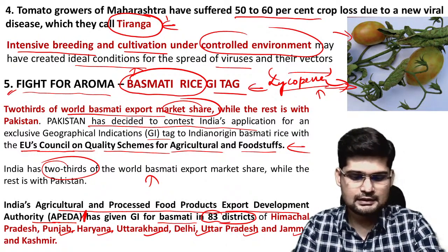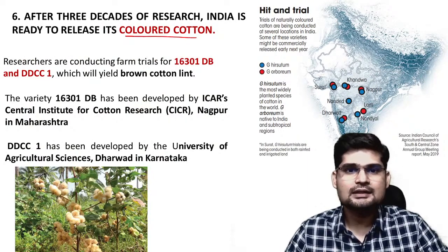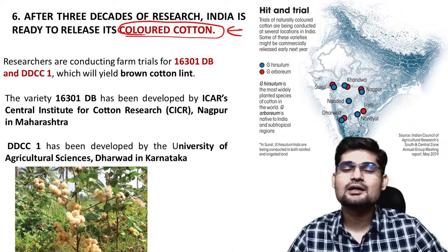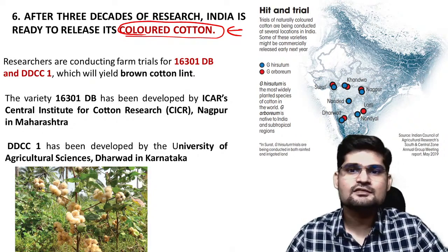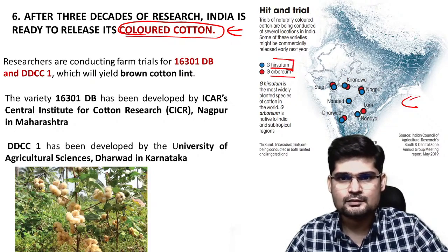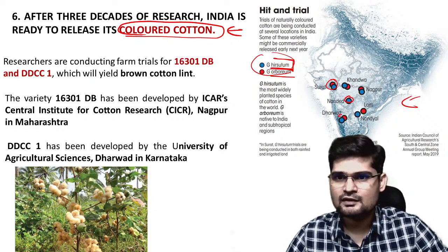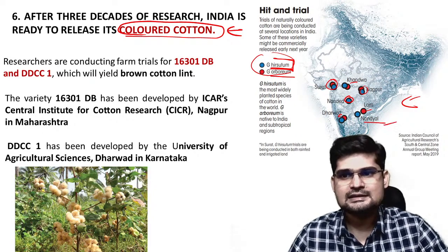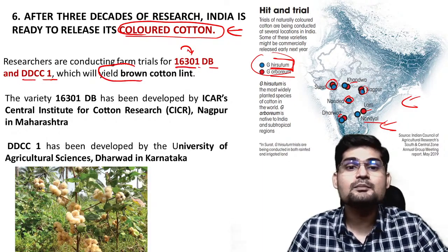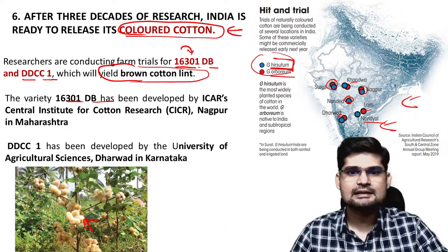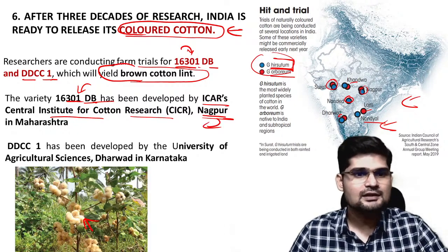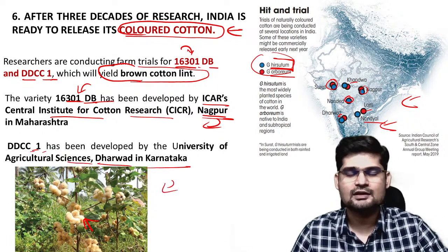Colored cotton has come into news after over 30 years of research. Trials of producing colored cotton in India are underway using two varieties — G. hirsutum and G. arboreum. Trial locations include Surat, Nanded, Dharwar, Khandwa, Nagpur, Lam, Nandyal, and Coimbatore. Researchers are testing varieties 16301 DB and DDCC1 which yield brown cotton lint. Variety 16301 DB is from ICAR's Central Institute for Cotton Research at Nagpur, and DDCC1 is from the University of Agricultural Sciences, Dharwar.